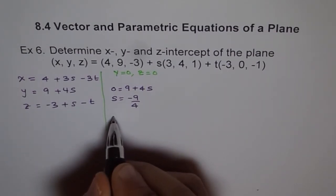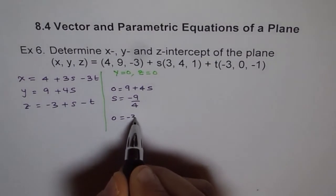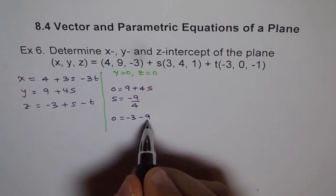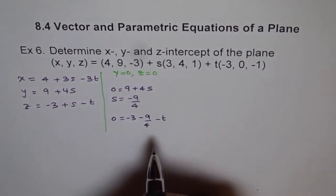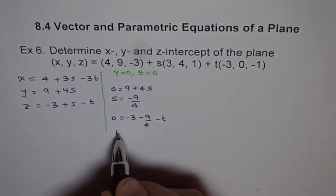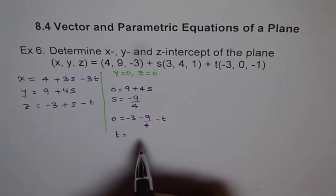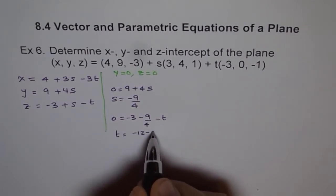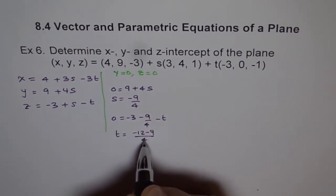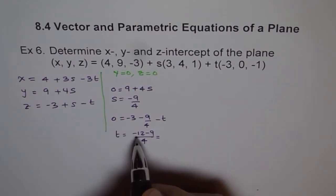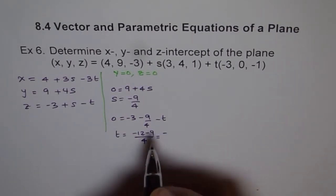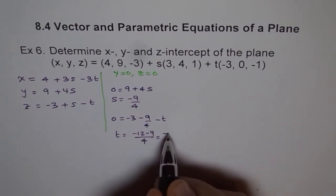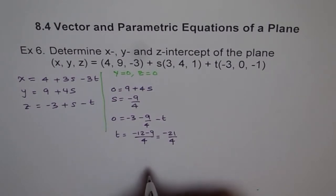Setting z equal to 0: 0 equals minus 3 plus S minus T. Substituting S equals minus 9 over 4, we get 0 equals minus 3 plus minus 9 over 4 minus T. Combining minus 3 and minus 9 over 4 gives minus 21 over 4, so T equals minus 21 over 4.